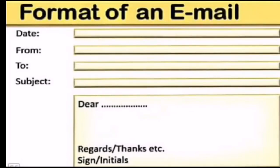Today our topic is writing an email informally. The format of an email can be used for both formal and informal types. To write an email you must first have an email address. The date is written first, and since it is electronic mail it will be filled automatically. In front of 'From,' the email address of the sender is written. In front of 'To,' the email address of the receiver is written — the person to whom the email is being sent. In front of 'Subject,' you write the purpose of the mail. Then you start writing the email body. The opening depends on who you are writing to. After completing the email, there is a closing, where you can write 'Regards,' 'Thanks,' or other greetings.